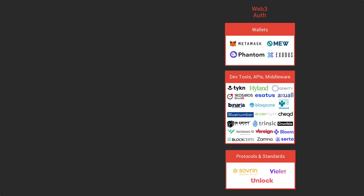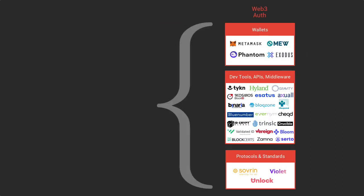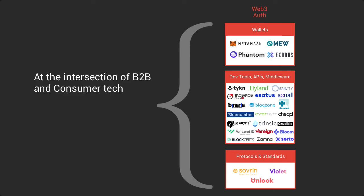The next block on our map is the Web3 auth block. What is interesting here is that many crypto identity projects are at the intersection of B2B and B2C. There is a growing number of identity services based on blockchain technologies that are changing how users' authorization, authentication, and identity verification are made. This whole Web3 auth trend is super exciting and could have a big impact on the future of this space.